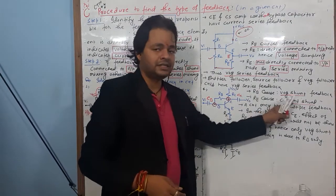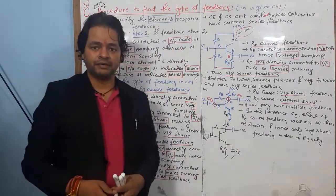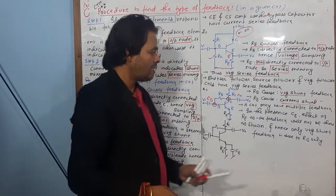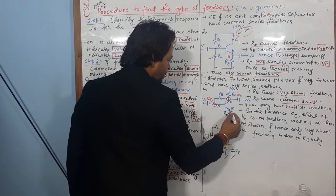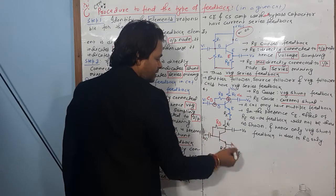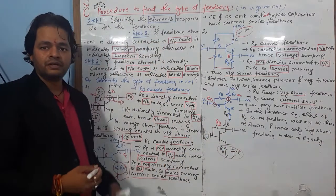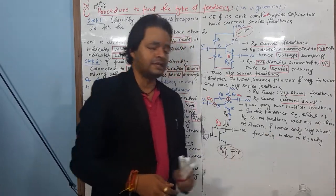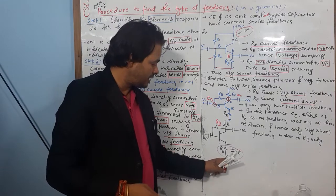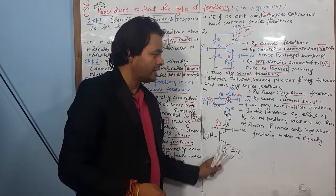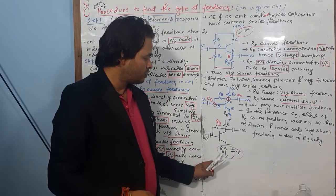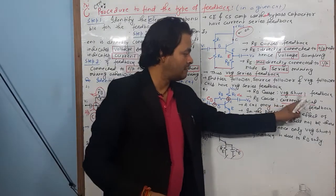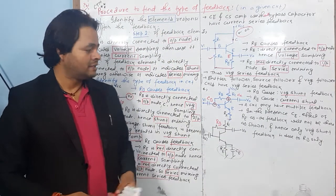So due to RB, there is voltage shunt feedback, and due to RE, there is current shunt feedback. Therefore, this circuit has multiple feedback. Now, if a bypass capacitor CE were present, it would short-circuit RE, and the effect of RE as negative feedback would not be there because of CE. In that case, only voltage shunt feedback due to RB would remain.